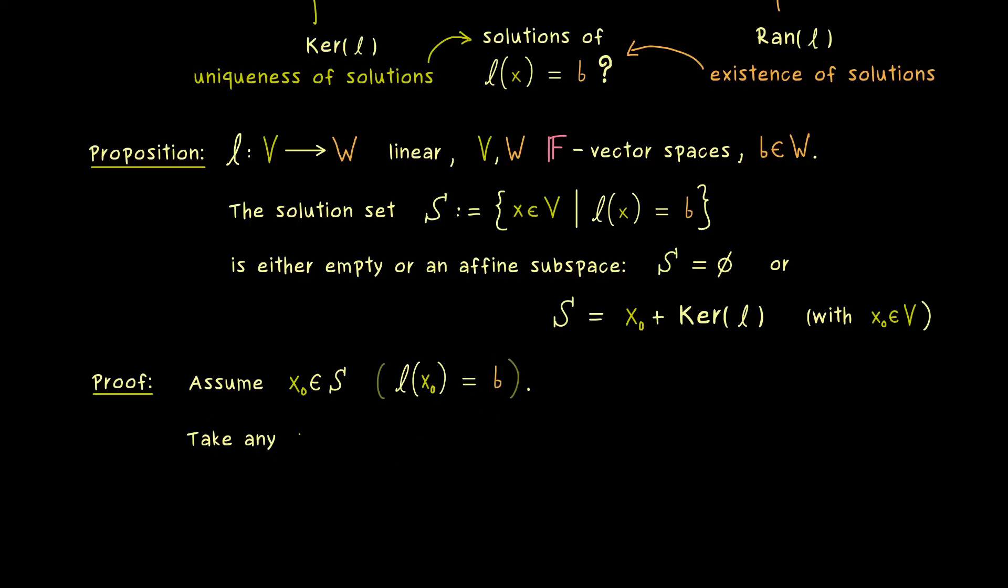And now in the next step, let's take any vector v in our vector space V, and then we look at the combination x_0 + v. What we want to show is that this new vector lies in S if and only if v comes from the kernel of l. This is not hard at all because the characterization of being in the solution set is really simple.